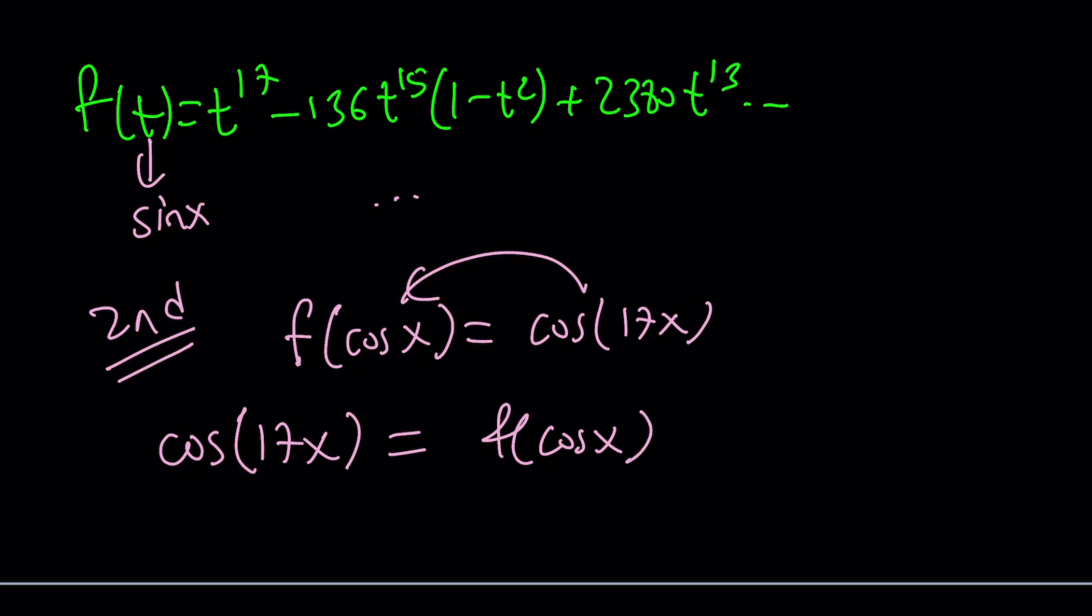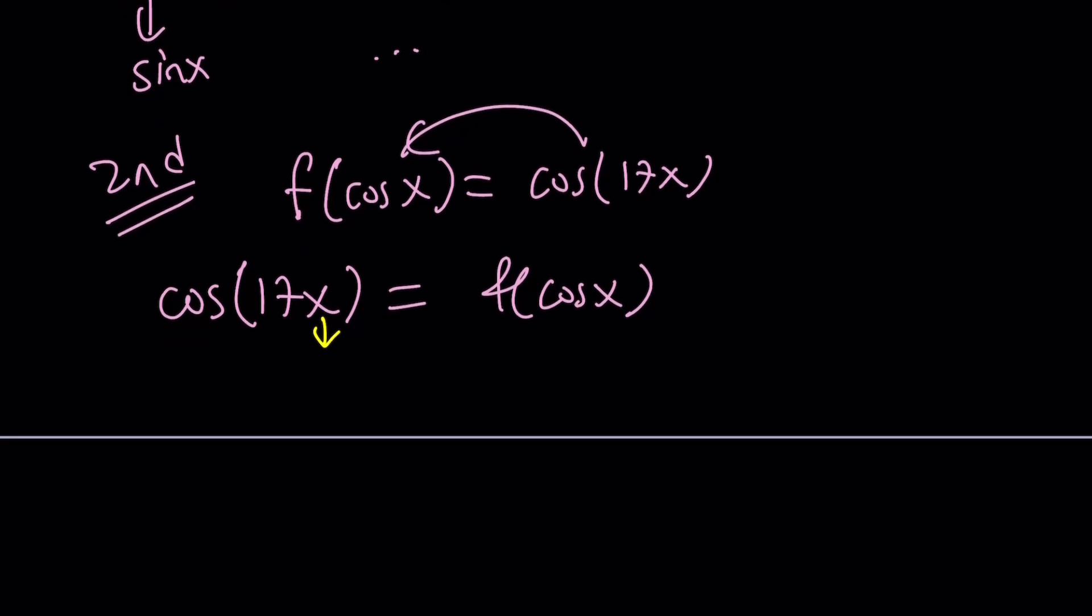I want to replace x with something so that I can change the name of the function. And that can be easily done if you consider the co-function, or should I say complementary angles. So if you go ahead and replace x with π/2 - x on both sides, it's going to work.